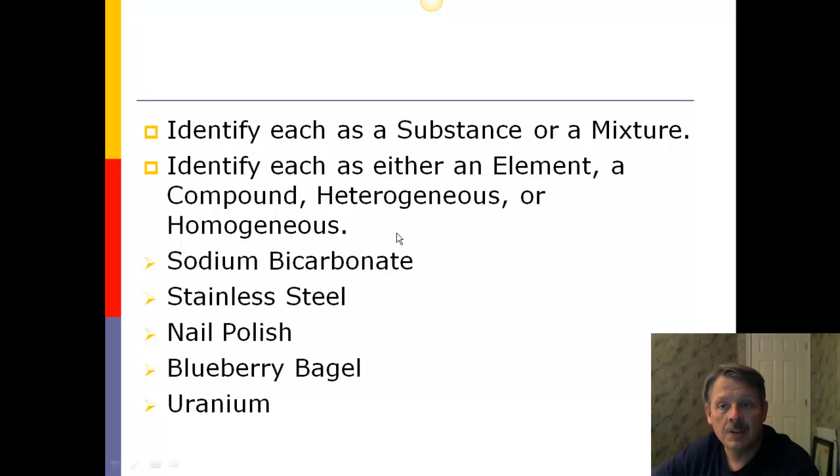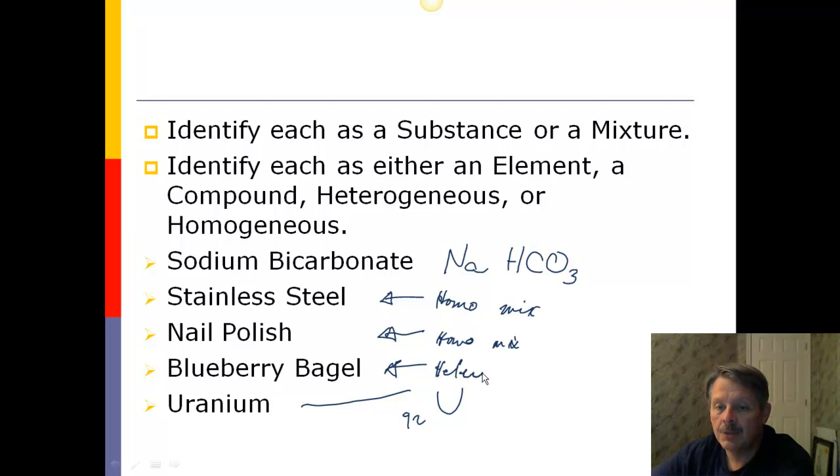So, for these items below, identify them as a substance or a mixture. An element, a compound, a heterogeneous or homogeneous mixture. Pause the video. Go ahead and see if you can do it. The first one here is sodium bicarbonate. That's NaHCO3. I realize you don't know the formula yet, but that's okay. Sodium bicarbonate is a compound. Let me jump right down to the bottom. Uranium. Uranium, you should have found on a periodic table. Uranium is element U. It's number 92. It is an element, which leaves the three in the middle. Stainless steel looks like one thing. So, it's a homogeneous mixture. Nail polish, probably a homogeneous mixture. Now, some of them are not, because you'll have glitter in them and stuff, and those are heterogeneous mixtures. And a blueberry bagel is definitely a heterogeneous mixture, because you can see the blueberries as well as the bagel.